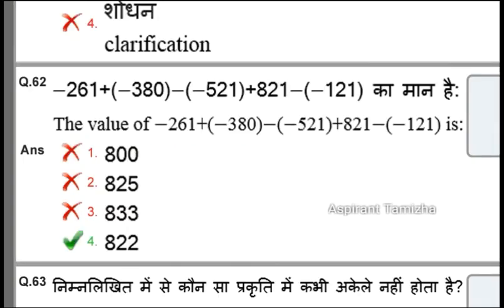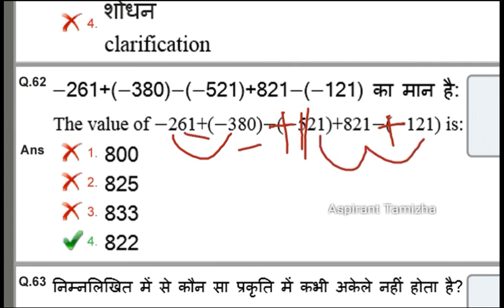The next question is a simplification-based one. Here, minus into minus 1 is plus 121. And here plus 521. So here we have minus, minus 2 plus 3 is 500, here we have minus 5, here minus 6. Here is 80 and here is 61, and here is 21. The total is 63.